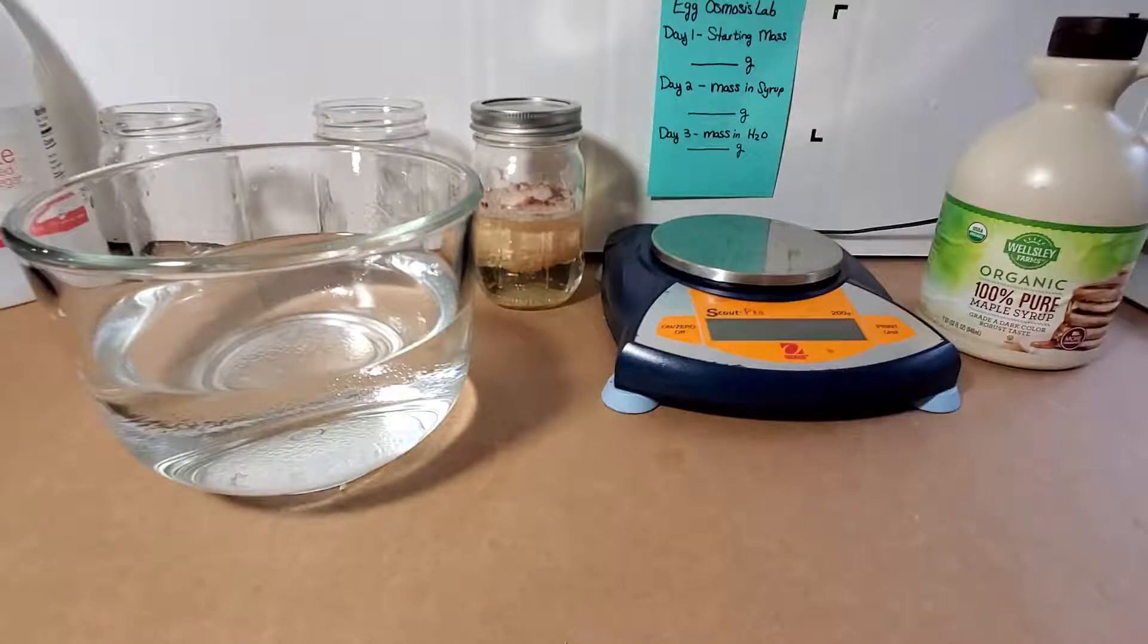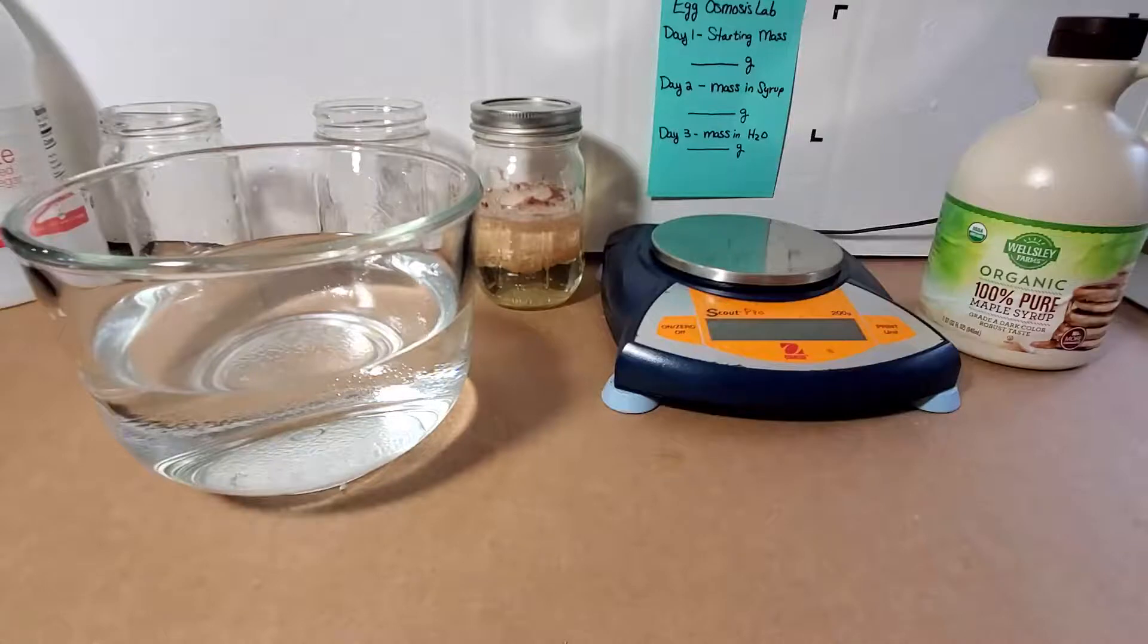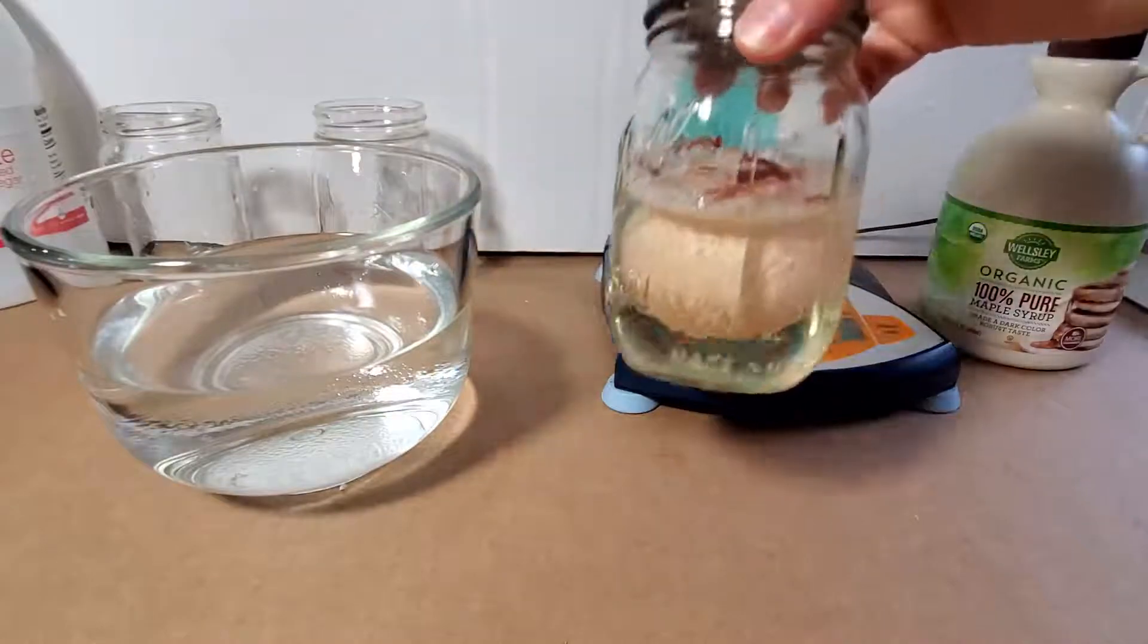Good morning and welcome. This is Mrs. Rowe and this is part of our biology class at home series. Today we are going to be looking at our egg osmosis lab and we are going to be looking at how our animal cell responds to changes in solution concentrations in its environment. This lab is going to be used more specifically to be adding more vocab as we are going through understanding how materials can be transported in and out of cells.